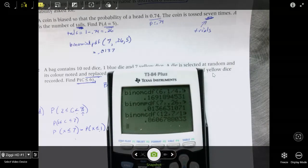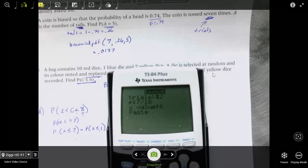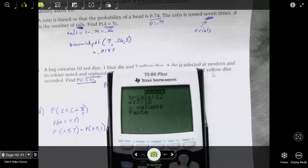If you didn't use the cumulative function, you would have to do the probability of 1. Basically, you can do everything from 2 to 7. You have to do 2 plus 3 plus 4 plus 5 plus 6 plus 7 using binomial PDF.